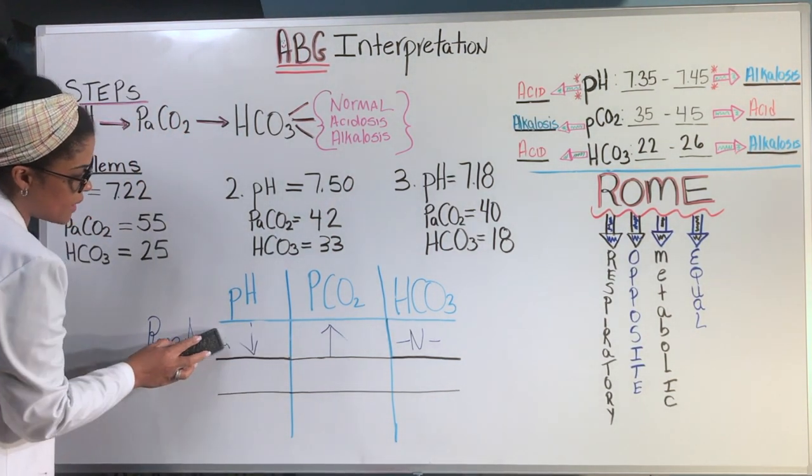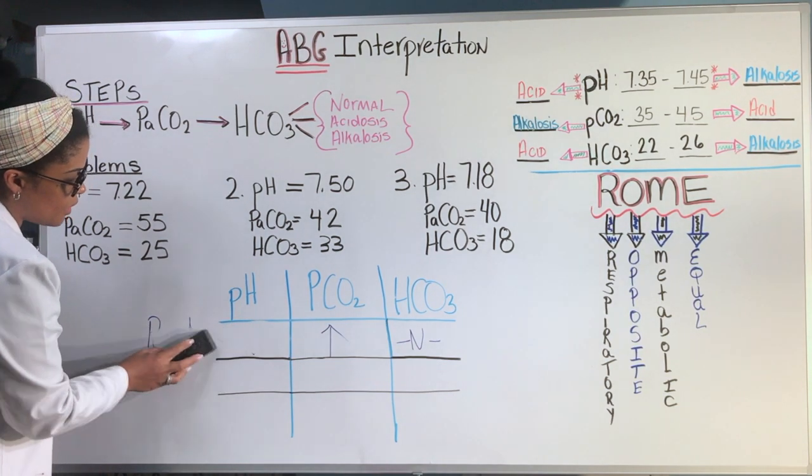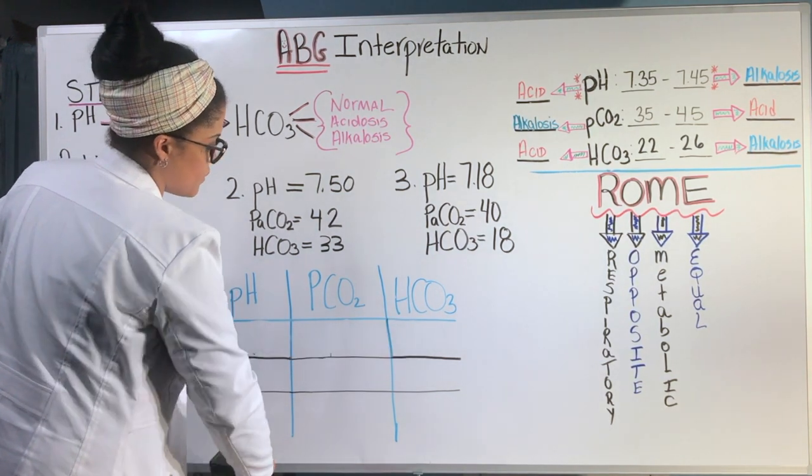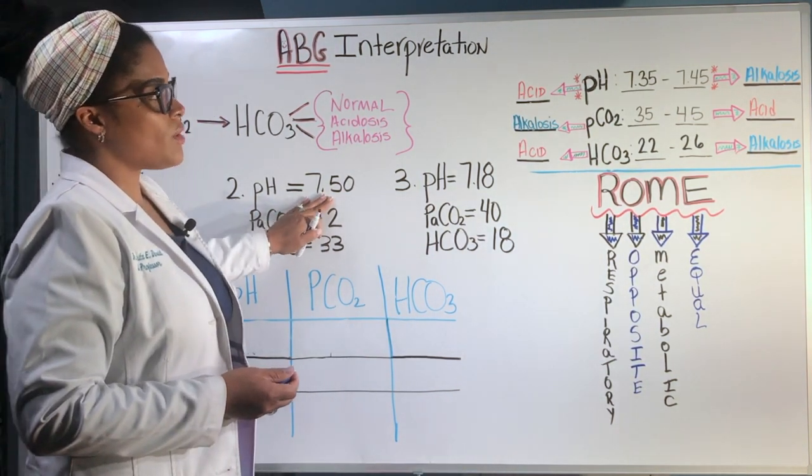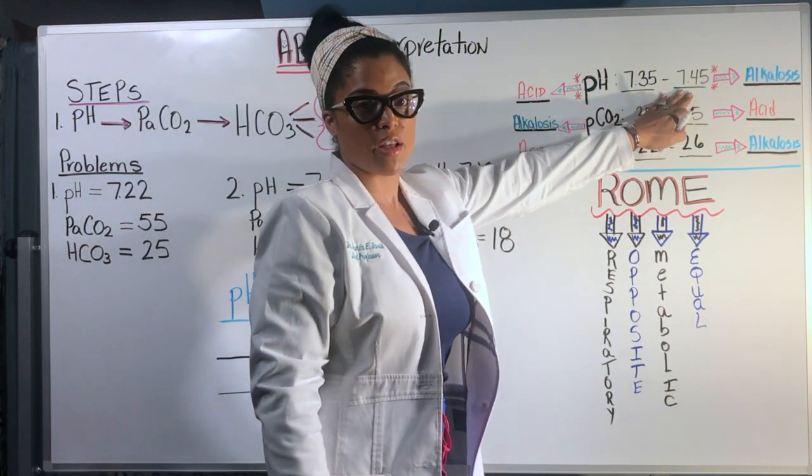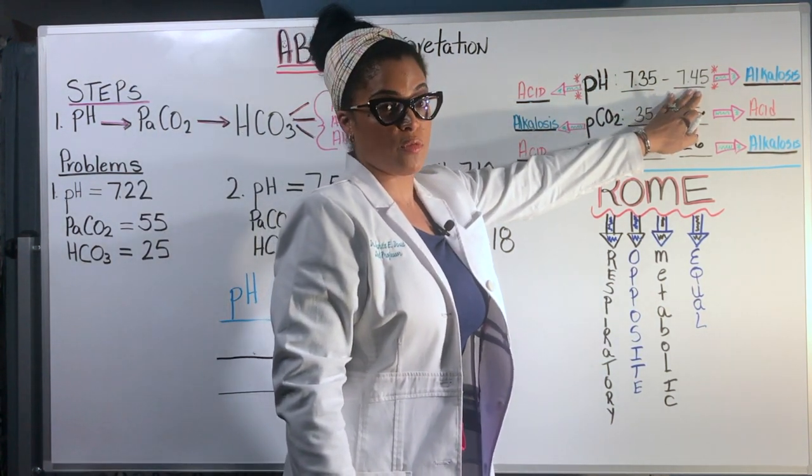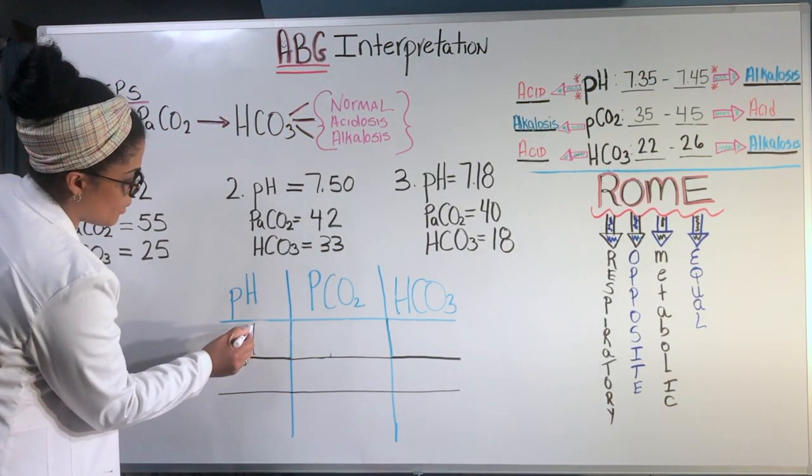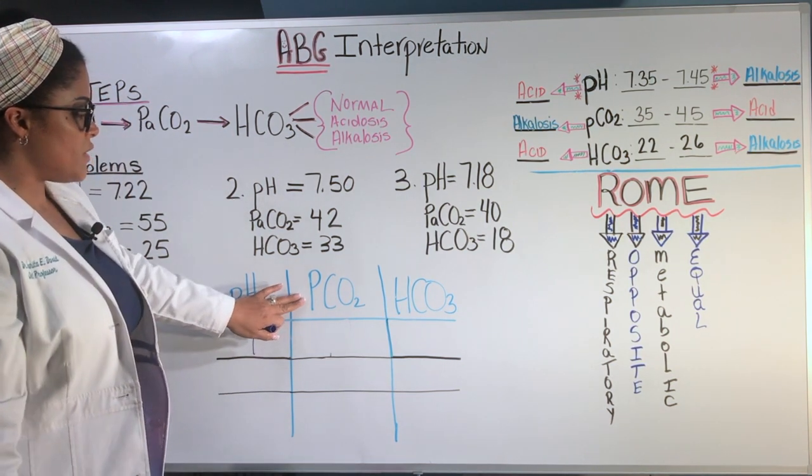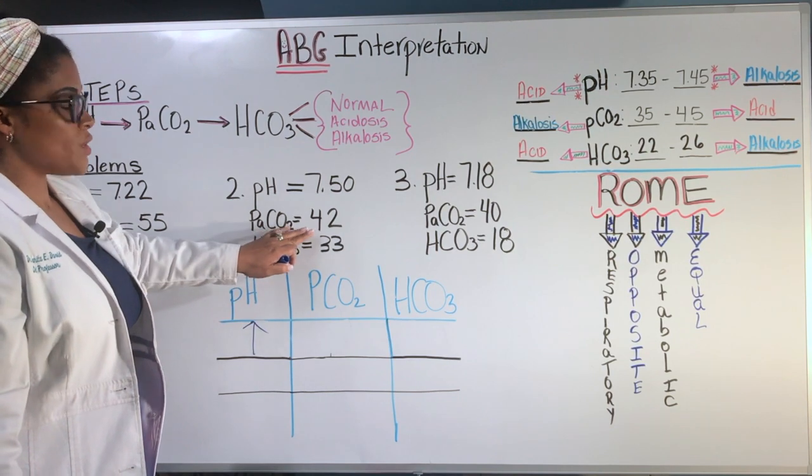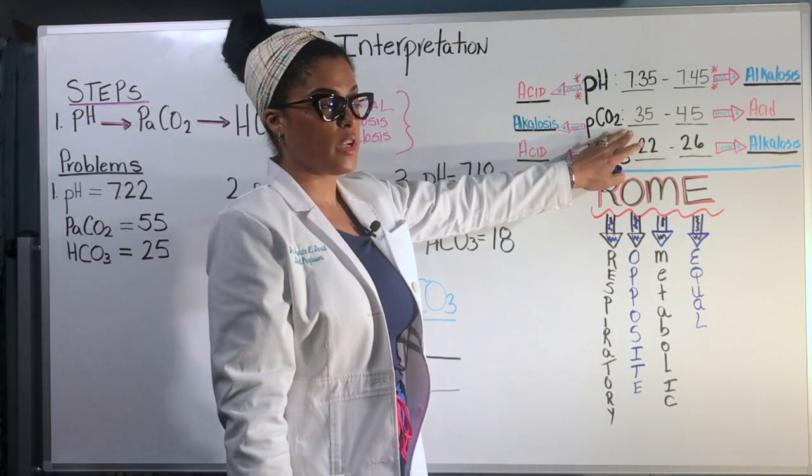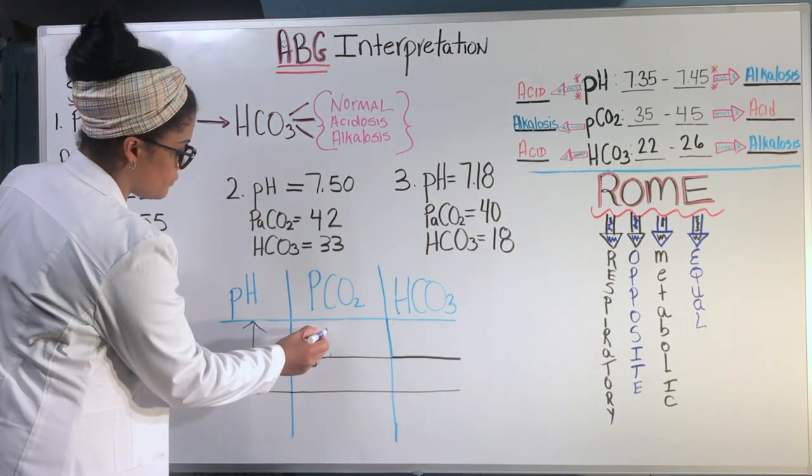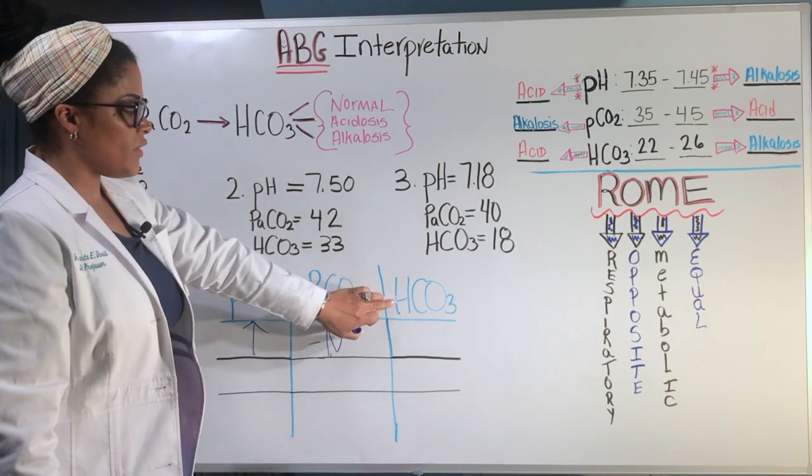Now we're going to do the second example. In the next example, you see that the pH is 7.50. A pH of 7.50 means that it is higher than the maximum value that it should be of 7.45. So it's an alkalosis. So here we're going to put this arrow to be going up. Then we look at the CO2. The CO2 level in this example is 42. As you see from the normal range, it goes from 35 to 45. So it is normal.